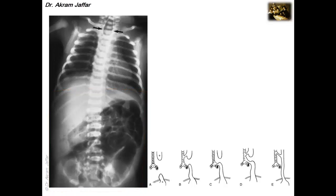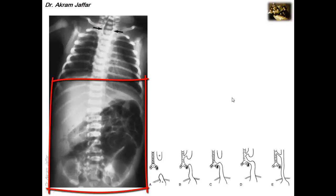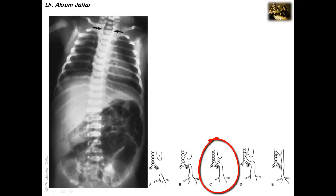This next X-ray again shows a catheter coiled within the proximal part of the esophagus, indicating atresia of the upper esophagus. At the same time, we can see gases in the abdomen, indicating communication between the lower esophageal segment and the respiratory tree. This patient also has a combination of tracheoesophageal fistula with esophageal atresia in addition to imperforate anus, which is why there is a lot of meconium in the large intestine. This represents Type C — the common type.